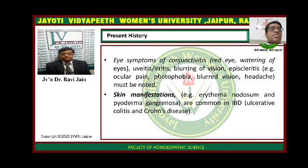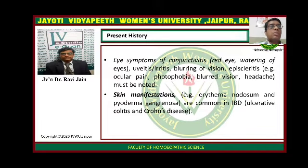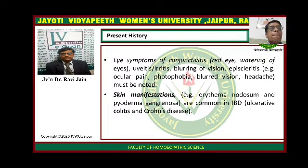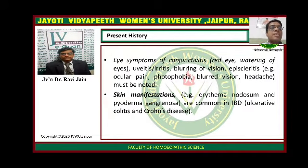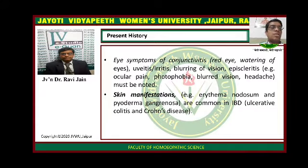In the present history, you should ask about the eye symptoms — symptoms of conjunctivitis, i.e. red eye and watering of the eyes; uveitis or iritis; blurring of the vision; episcleritis with ocular pain. You should ask about photophobia, blurred vision, and headache, which must all be noted down.